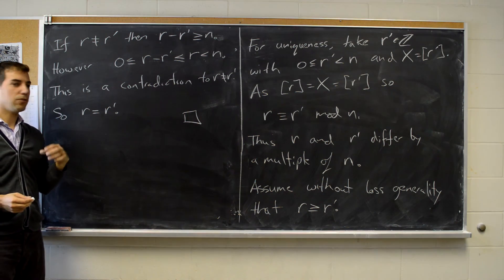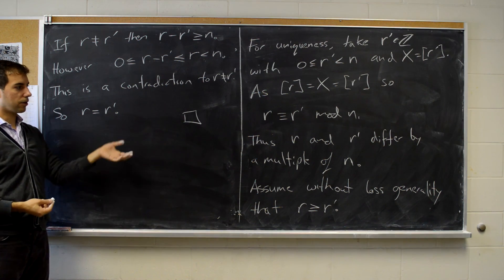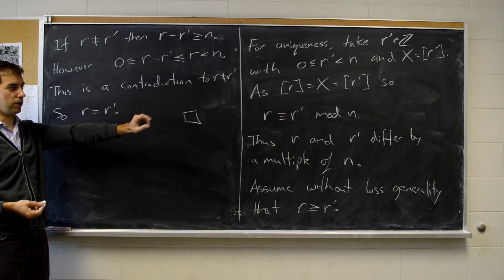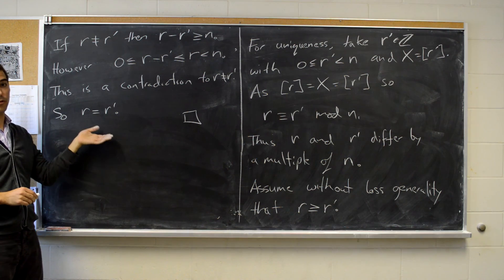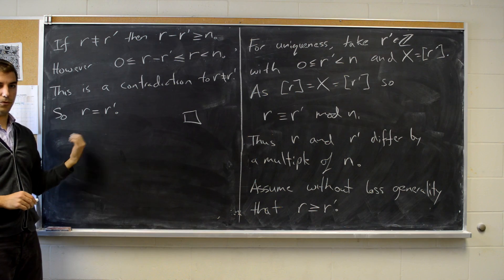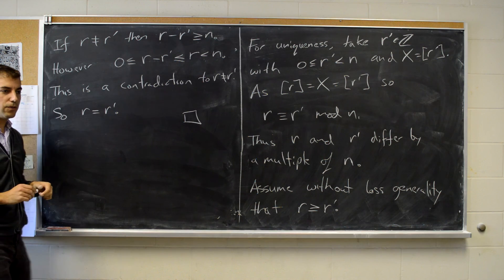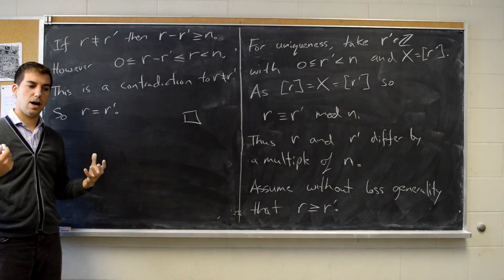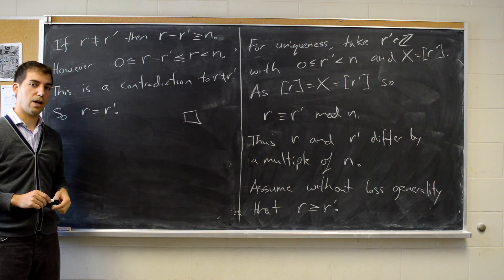The moral of the story is: if you want a nice representative for your congruence class, just apply long division by n. You'll get a remainder that is congruent to the original, and that remainder is your canonical representative in the range [0, n). In the next video, I'm going to take our congruence classes and put additive and multiplicative structure on top of them, so we'll start doing arithmetic with the congruence classes.